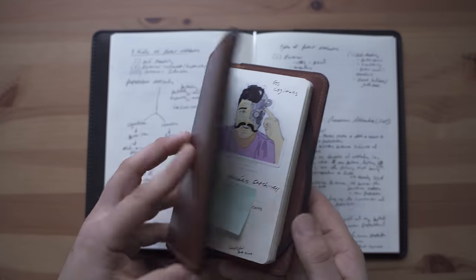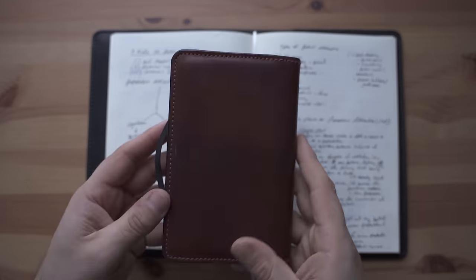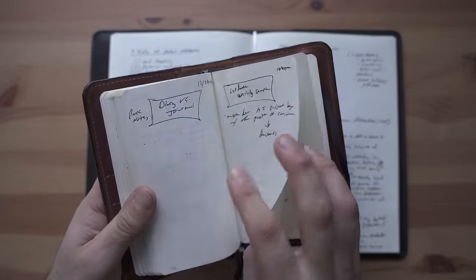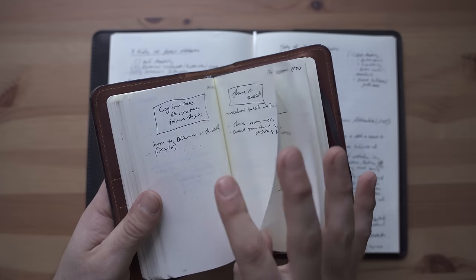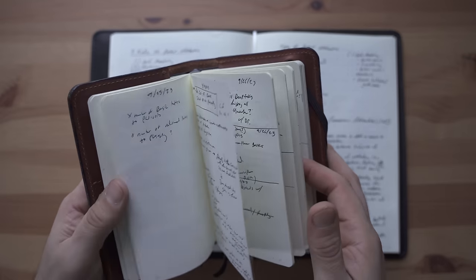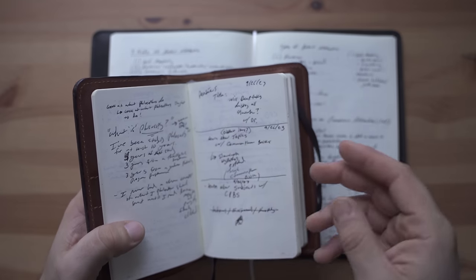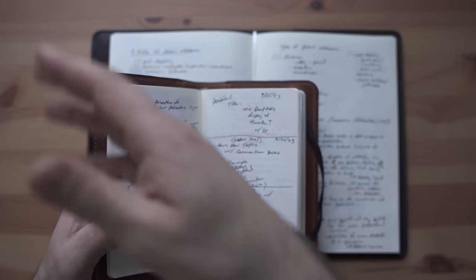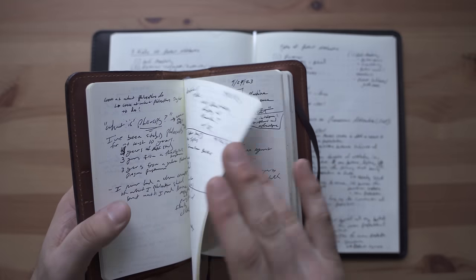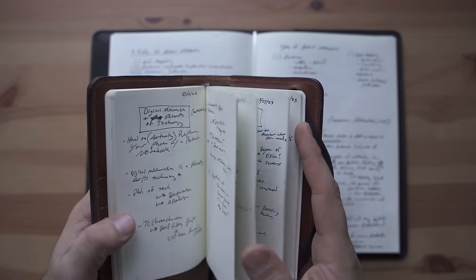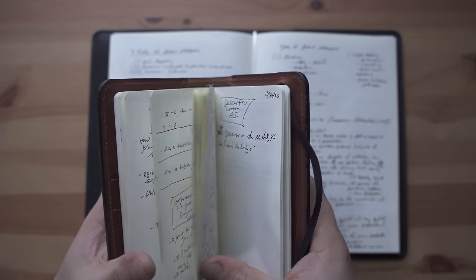Now right now I'm using this Leuchtturm 1917 A6 hardback pocket notebook with a Norman Kahn original leather cover. This is my idea catch-all and so I'm using this primarily to catch all the ideas that I don't want to forget throughout the day. I keep this with me at most times when I have a good idea I put it in here and then before bed I will abstract that idea out and put it into the other notebooks wherever it needs to go. I reflect on this throughout the day and this is probably my favorite way to keep a pocket notebook.